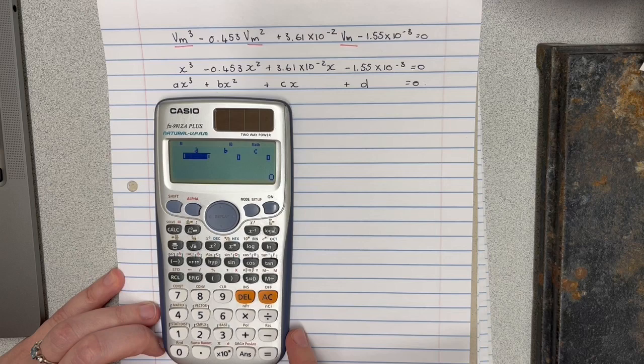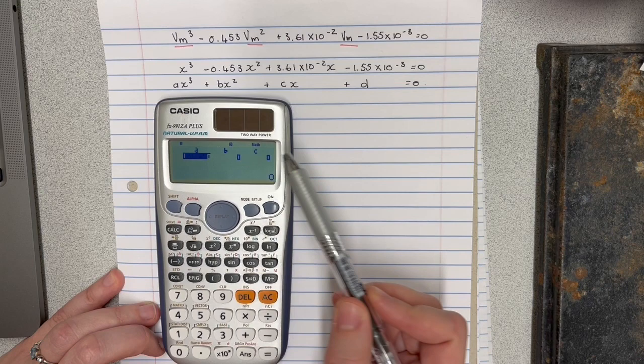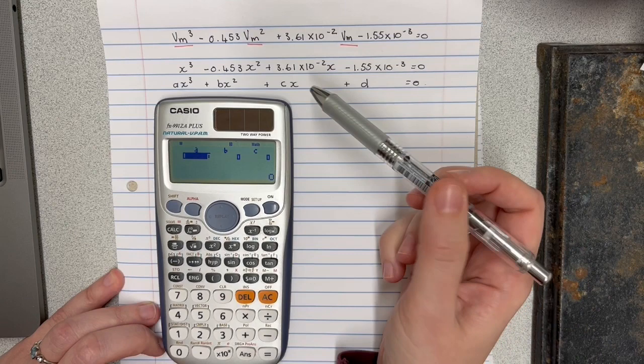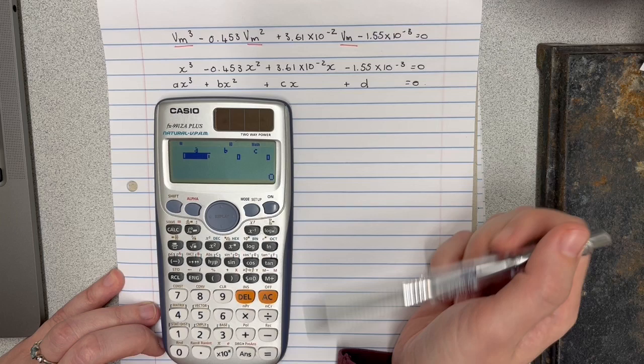And here we can see at the top of the calculator, it's asking for those a, b, c and d constants that we're going to take from our equation. So just very importantly, we do need to take recognition of the sign included with those constants, otherwise we'll get an incorrect answer.